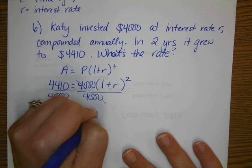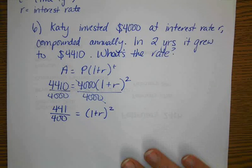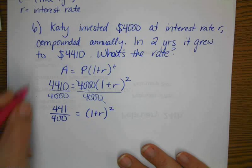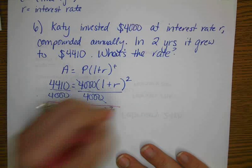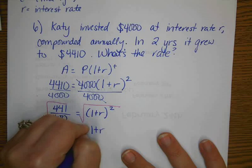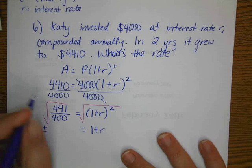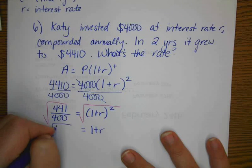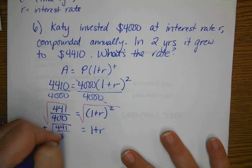equals 1 plus R quantity squared. And now that you're squaring, you can just undo that and square root both sides. And we have 1 plus R equals plus or minus the square root of 441 over 400.